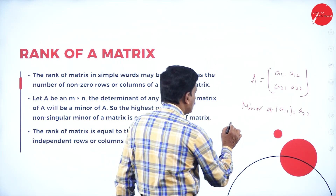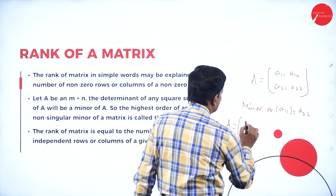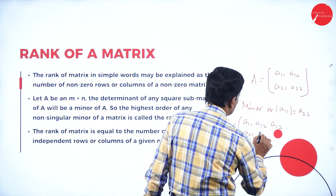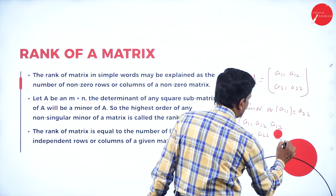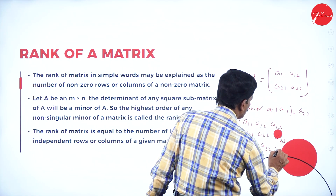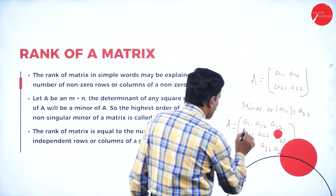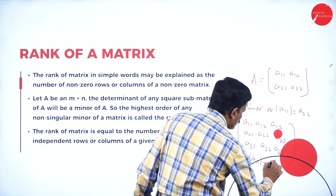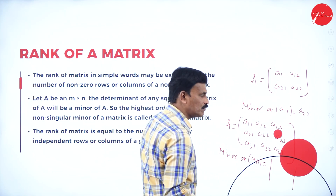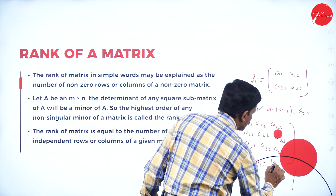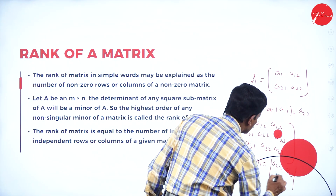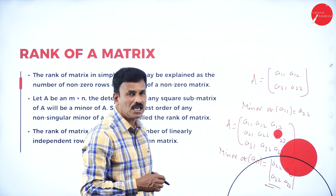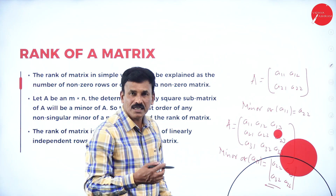Let me take another example. If A is a 3x3 matrix with elements A11, A12, A13, A21, A22, A23, A31, A32, A33 — what is the minor of the first element? The minor of A11 is equal to a second-order determinant: delete that row and column, giving you A22, A23, A32, A33. This is a very important concept to know for finding the rank of a matrix.